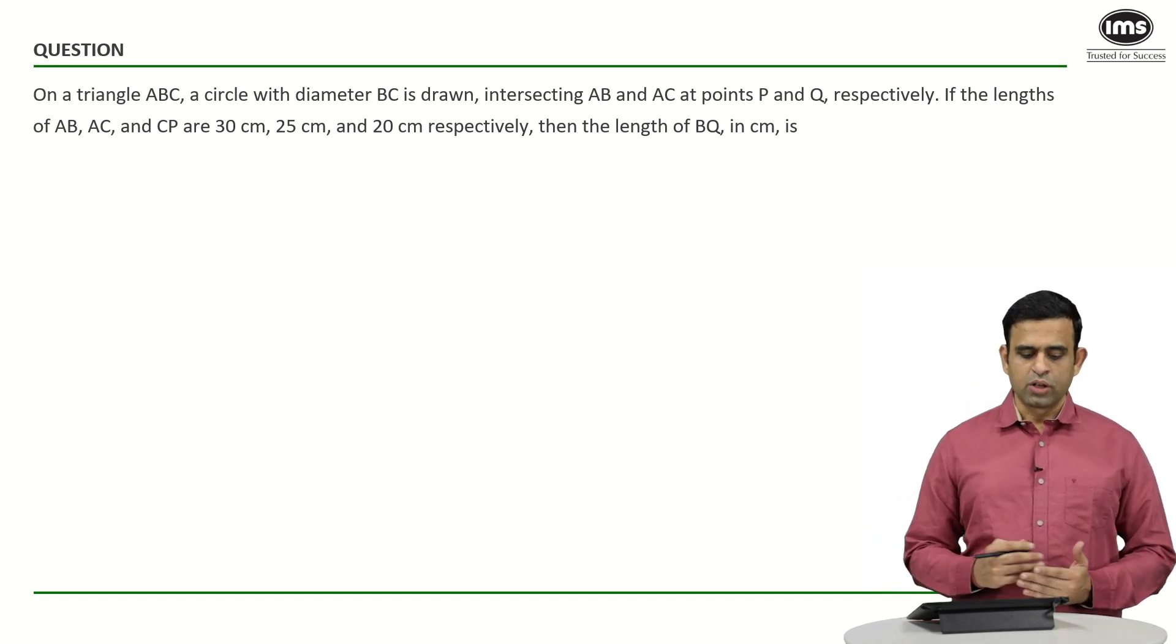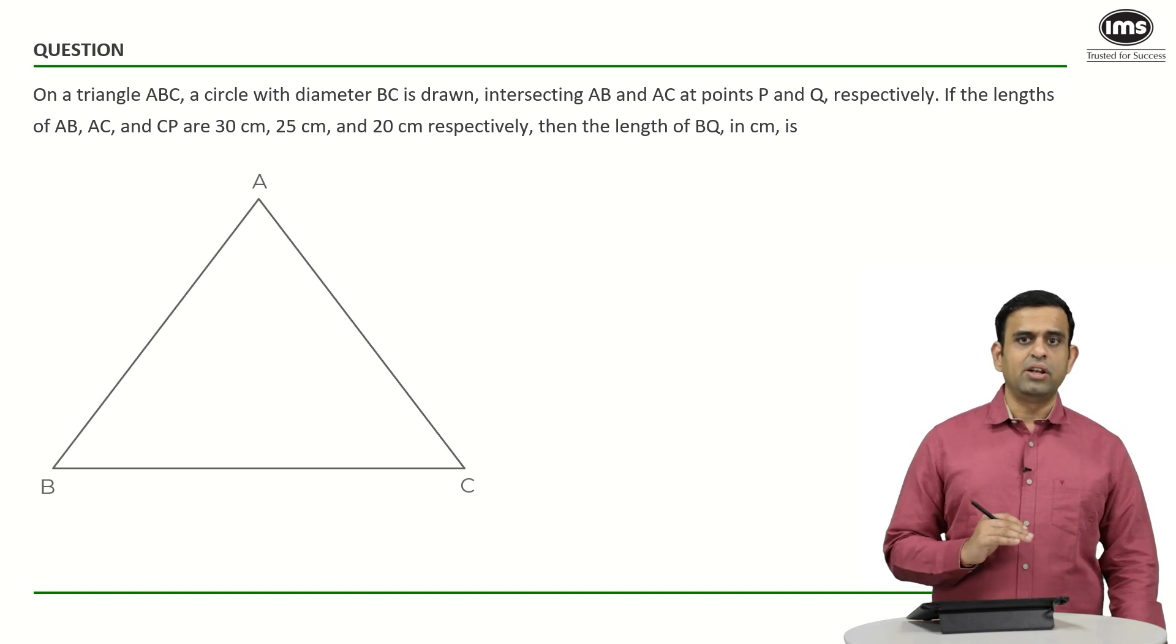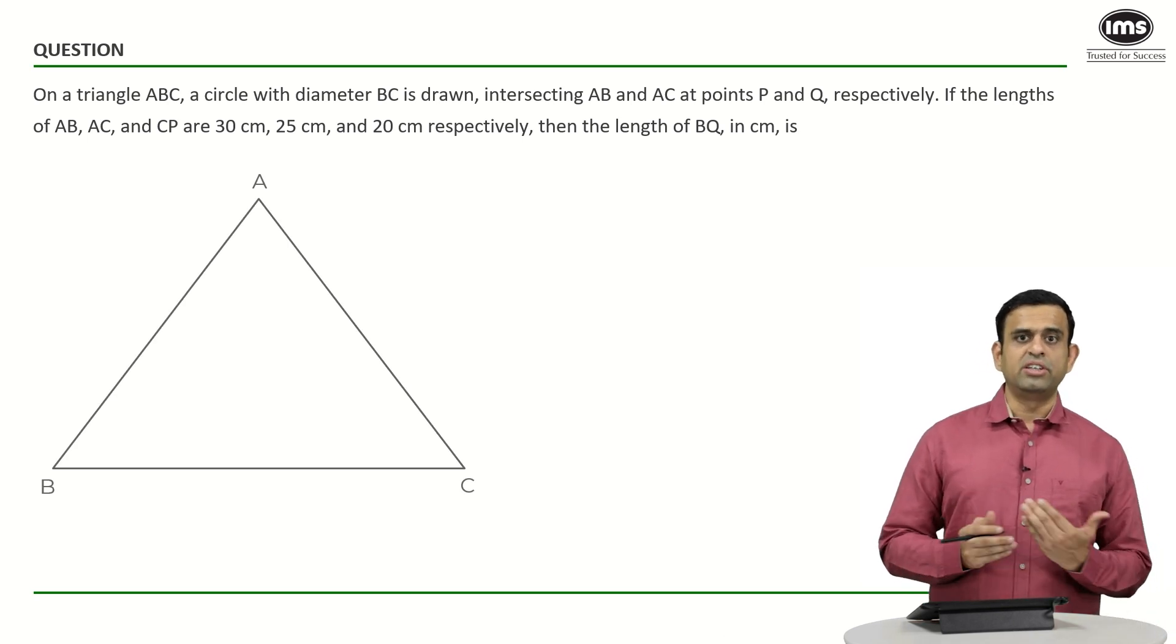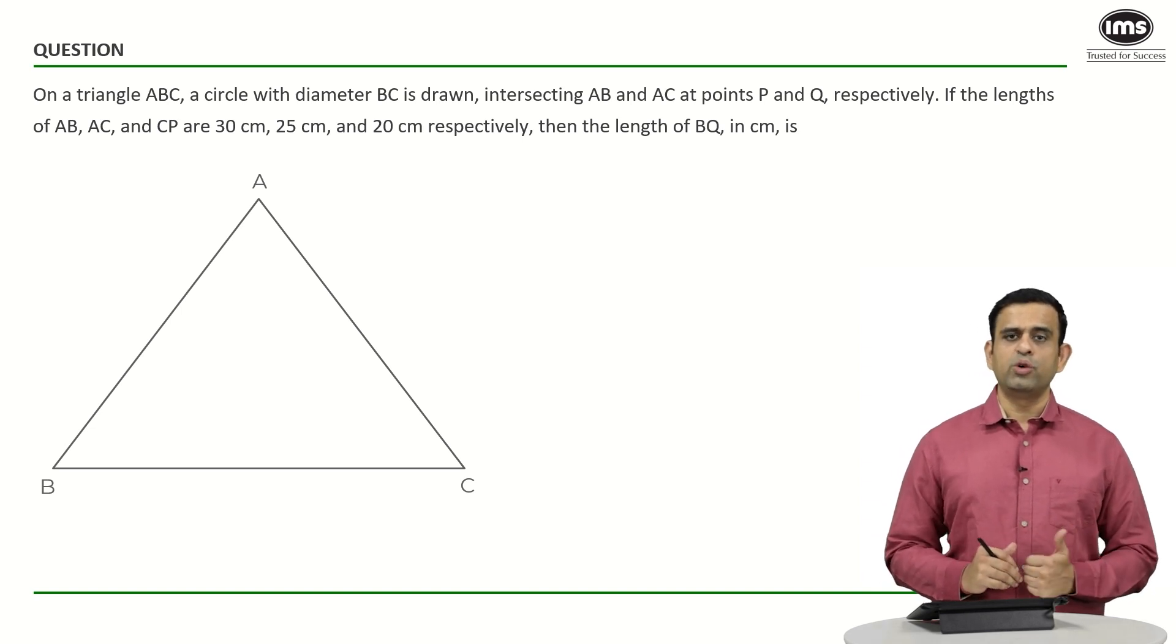First of all, we have a triangle ABC and then we are drawing a semicircle with BC as a diameter intersecting the side AB and AC at the points P and Q respectively. It will look like this.